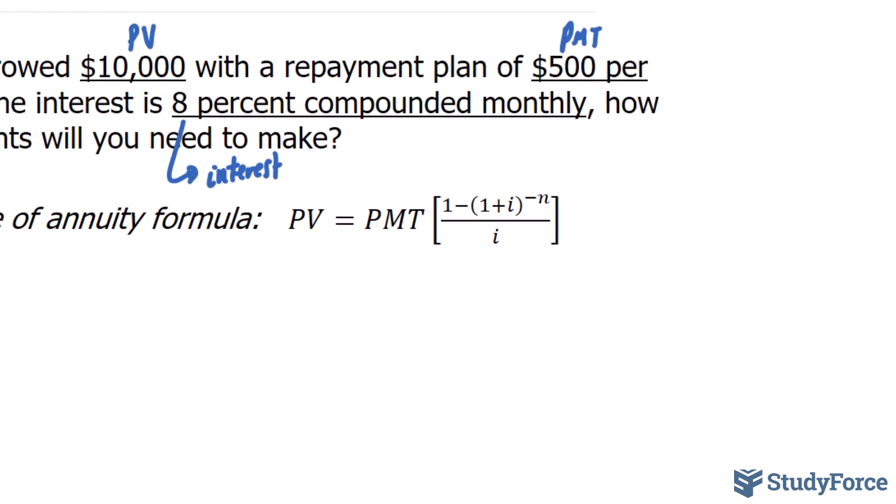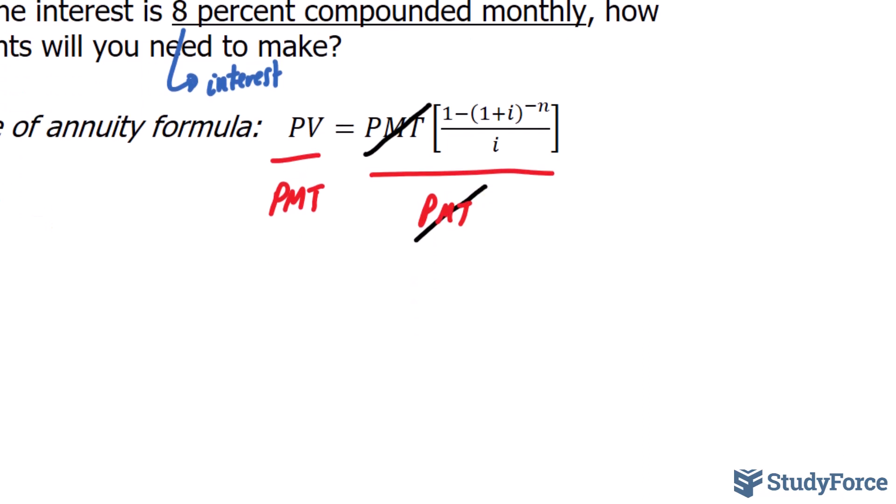The very first thing that I'll do is I will divide both sides of this equation by PMT. What this will do is it will cancel out this variable with that variable. So I have PV divided by PMT is equal to everything that remains on the right side.